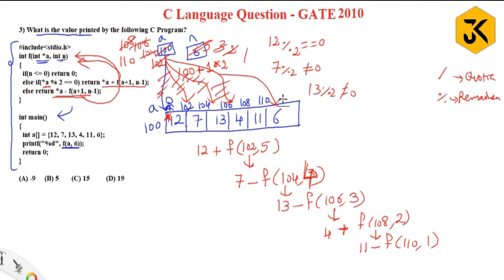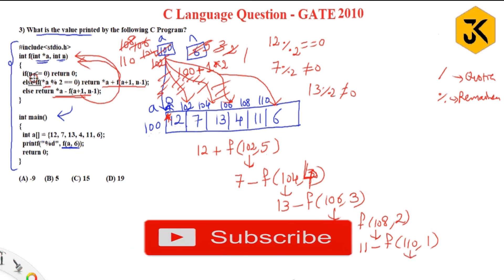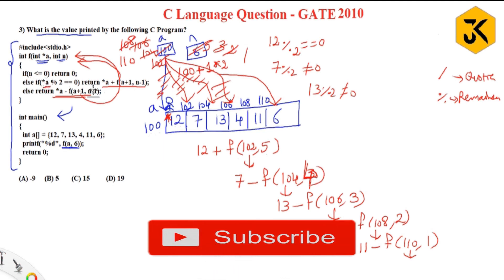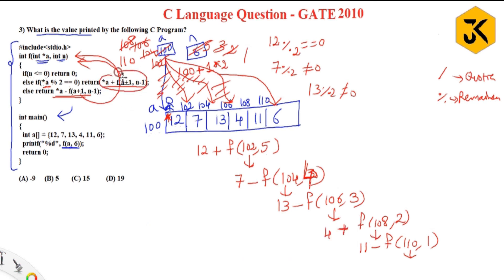Now a is 110, n is 1. Is n <= 0? No. Else case: star a — star a is 6. Is 6 % 2 == 0? Yes, obviously. So it executes the true case: return star a plus f(a+1, n-1), that is 6 plus f(112, 0).